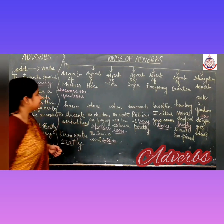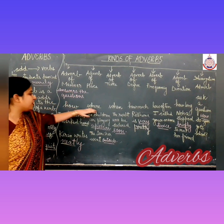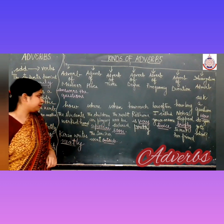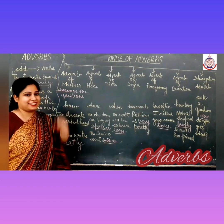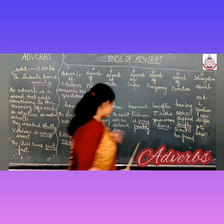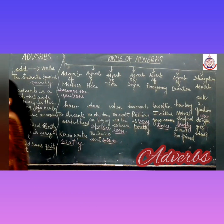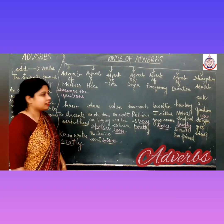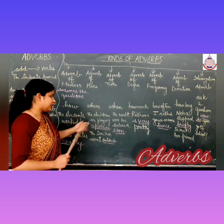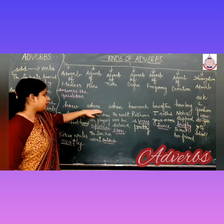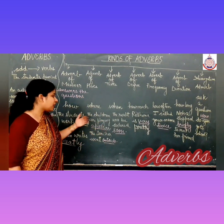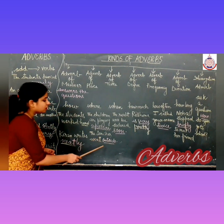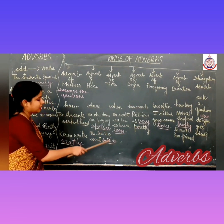Next, adverb of place. Adverb of place answers the question 'where'. For example, the children are playing upstairs. Where are the children playing? Upstairs. Another example: the teacher went outside. Where did the teacher go? Outside. So here upstairs and outside are adverbs of place.